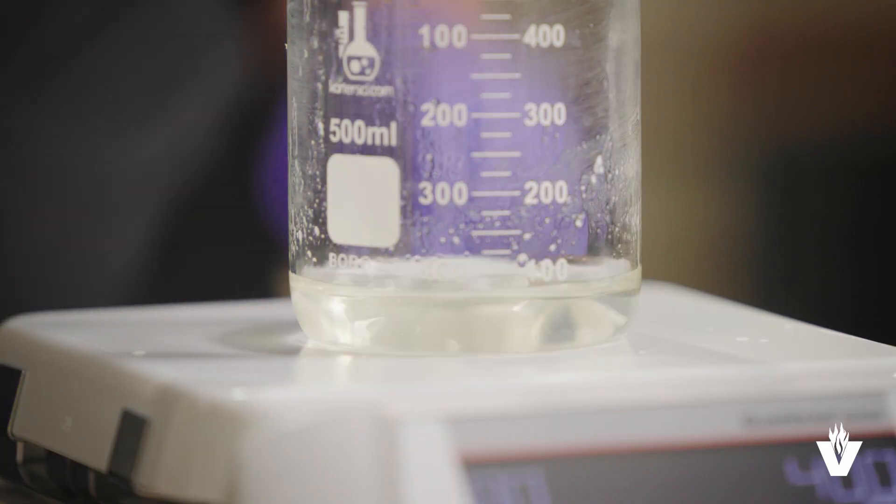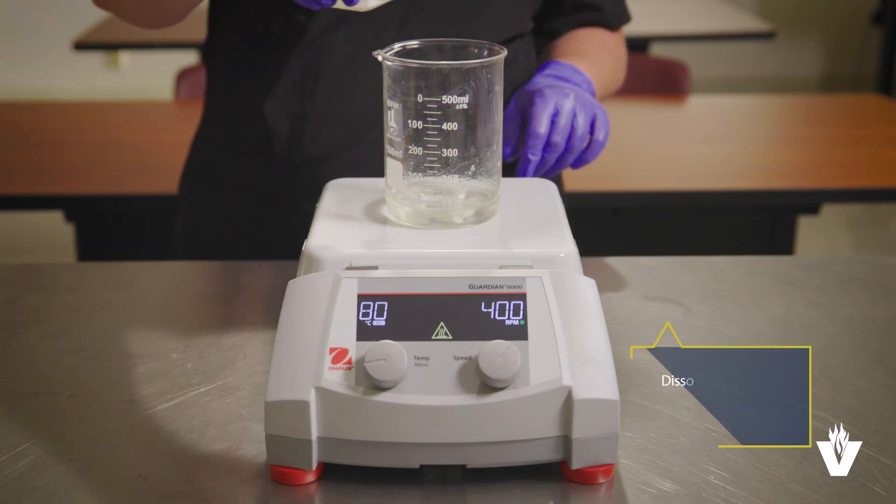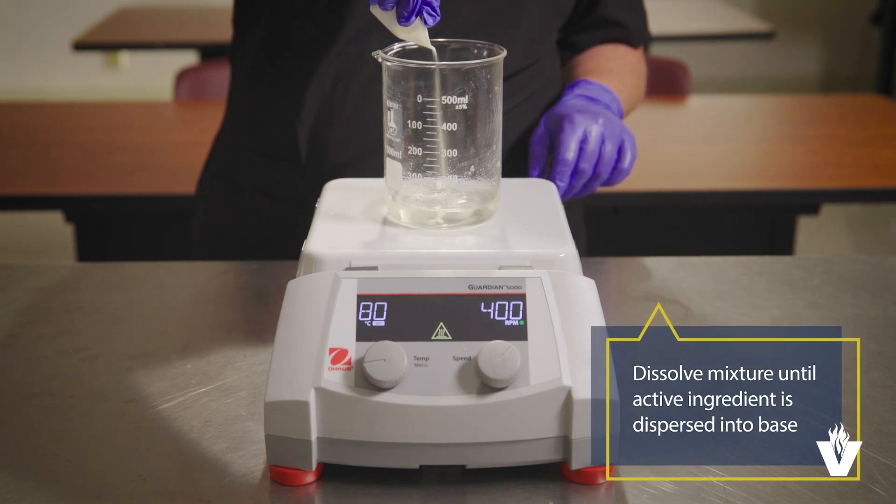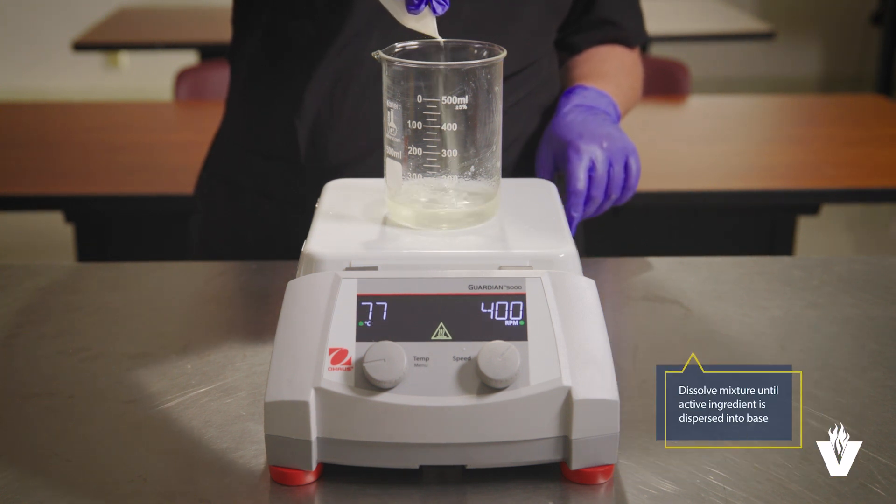Once the base ingredient is melted, add in your active ingredient powder and let the mixture stir until it dissolves and the active ingredient is dispersed in the base.